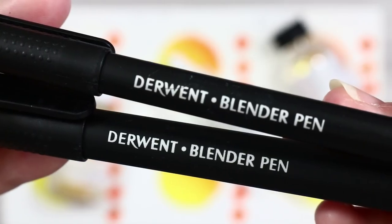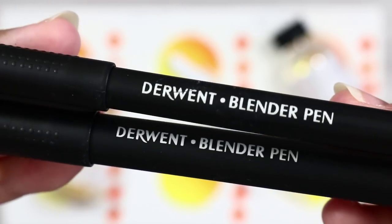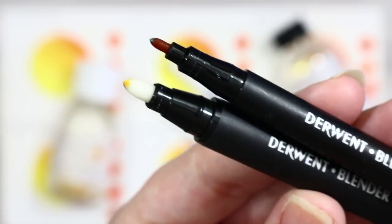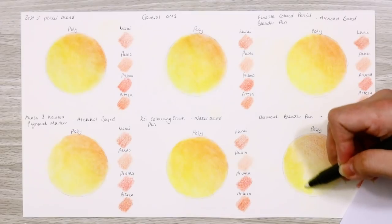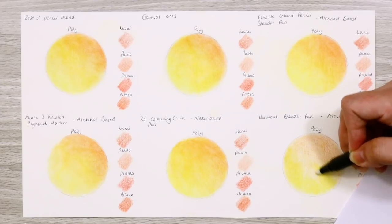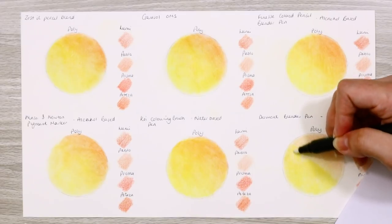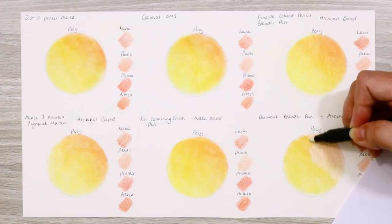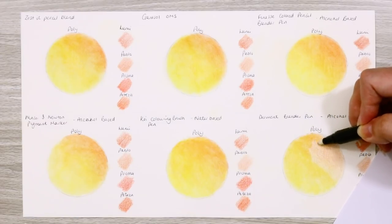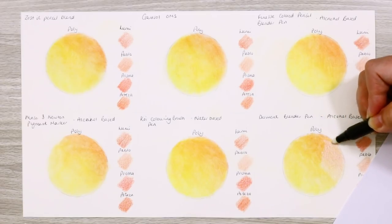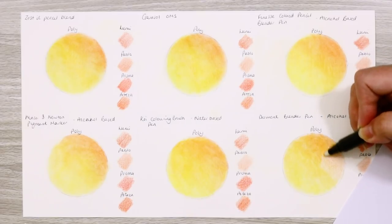Finally we have the Derwent blender pens. There's two types here: a big bullet nib and a small bullet nib. Both have exactly the same formula within them, you just use them for different areas. The small nib is great for small detailed areas and the larger is good for blending out large areas. So I've covered these before in my review and I really didn't give them a fair chance. Not only that, but my inexperience with blending meant I used them wrong, so let's correct that.